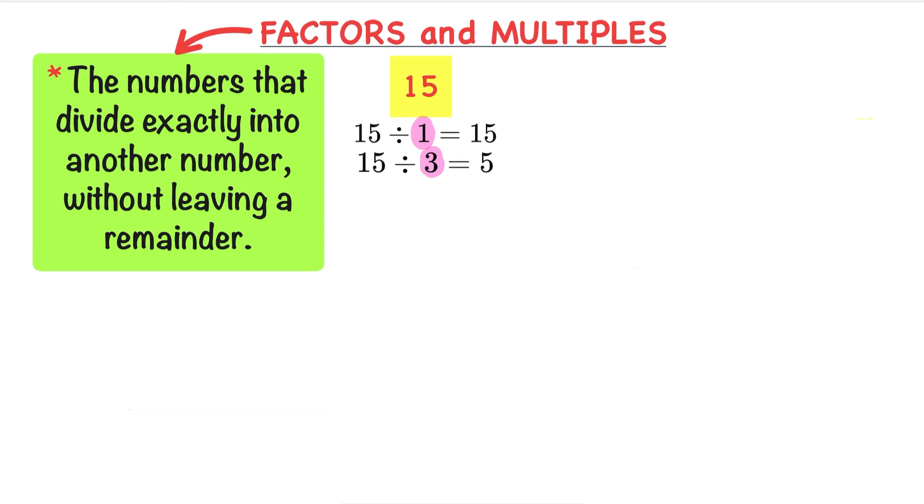15 divided by 4 equals 3 remainder 3, so 4 is not a factor. 15 divided by 5 equals 5, so 5 is a factor. 15 divided by 15 equals 1, so 15 is also a factor.